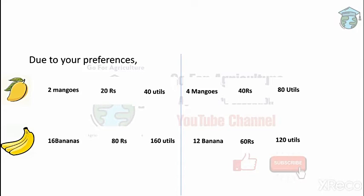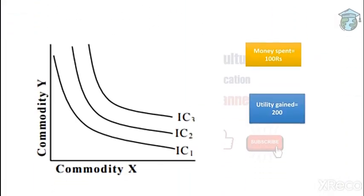According to the definition: in order to get maximum satisfaction, you give up one commodity so that you can increase the other. For example, instead of 5 mangoes you bought only 2 — you gave up 3 mangoes and compensated by adding more bananas. In this case, money spent and satisfaction obtained both remain the same. This is called indifference curve analysis.